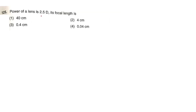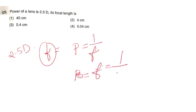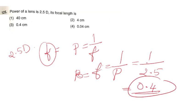Next question: Power of a lens is 2.5D. Find the focal length. Focal length equals 1 divided by power, so focal length equals 1 divided by 2.5D, which gives 0.4. The correct option is 0.4 metres.